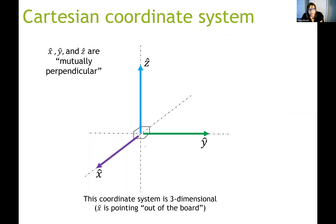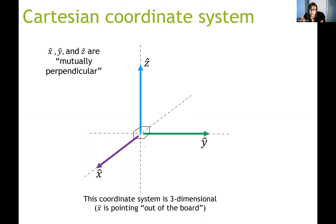The unit vectors of the Cartesian coordinate system are x-hat, y-hat, and z-hat. These define the three-dimensional space of the Cartesian coordinate system. In the picture shown here, it's a three-dimensional picture drawn in a two-dimensional plane. The y-hat unit vector is pointing to the right, the z-hat unit vector is pointing up, and the x-hat unit vector is coming out of the board toward us.